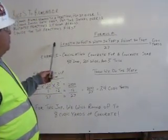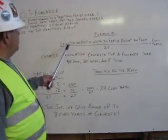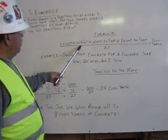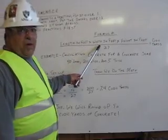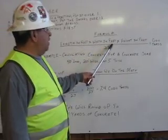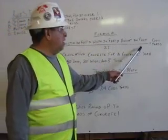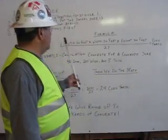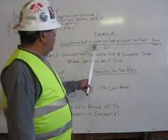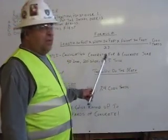The formula that we use to calculate cubic yards is length in feet times width in feet times height in feet, and it'll equal cubic yards. And we put it all over 27.